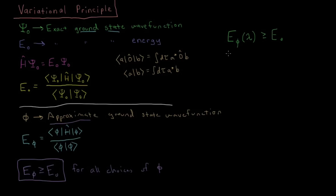This lambda is some parameter that we pick in the wave function — we make the wave function depend on some parameter. For example, it could be e to the minus gamma x squared, and gamma could be the parameter. Things like that.